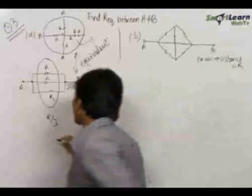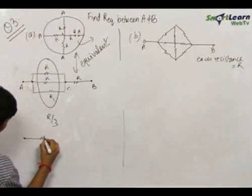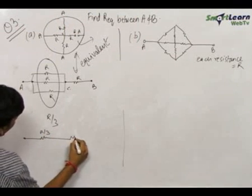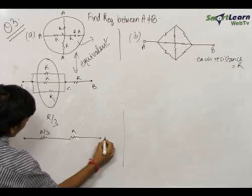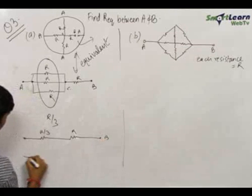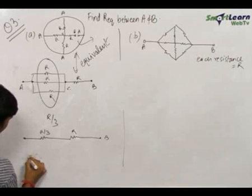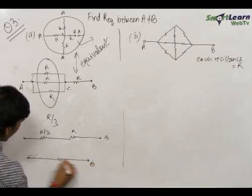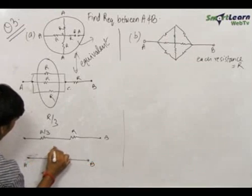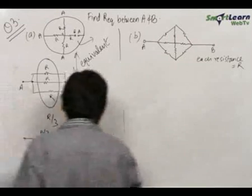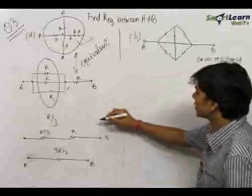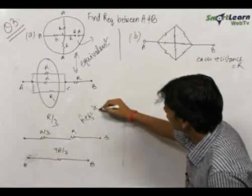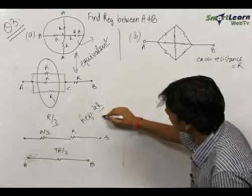So I directly wrote this as R/3. Now replace this by R/3, and we have another R in series. So the equivalent of these two will be equal to 4R/3 between A and B. Since these two are in series we add them up. Therefore the final answer for the equivalent resistance in the first case comes out to be 4R/3.